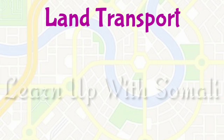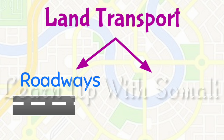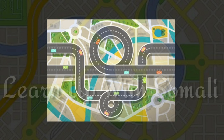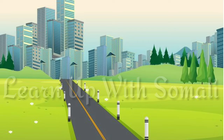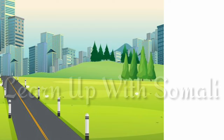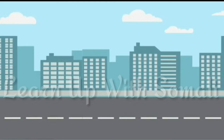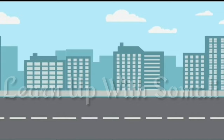Land transport can be categorized into two parts: roadways and railways. Roads are the means that connect one place to another on the surface of the land. Not all roads look alike — cities have broader and cemented roads compared to brick-paved and narrow roads in villages. Different vehicles running on roads, like bicycles, motorcycles, cars, trucks, and buses, constitute the means of road transport.